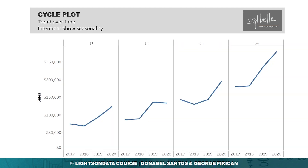If we are looking to show seasonality, we can use what we call a cycle plot. With cycle plots, we group together the same time period or season and see their performance across a different time period. In this example, we compare Q1 across four years, and we do the same for Q2, Q3, and Q4.